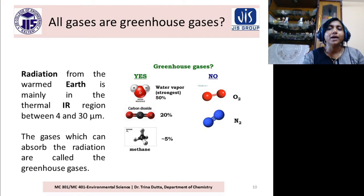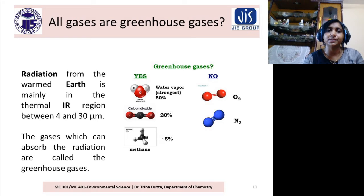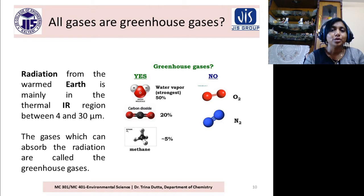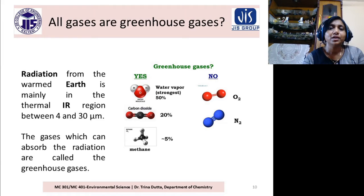So you have learned well what the greenhouse gases are. I told you there are only six greenhouse gases. Now the question arises: why are not all other gases greenhouse gases?